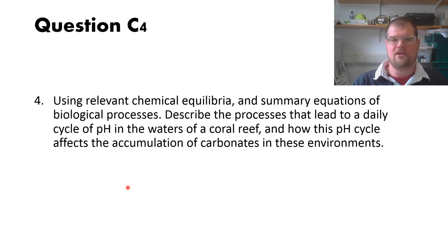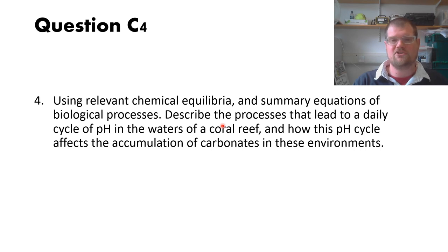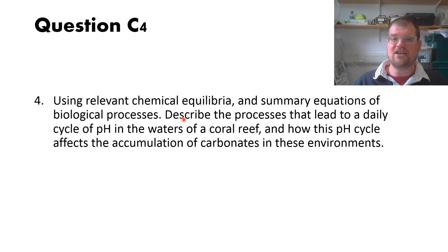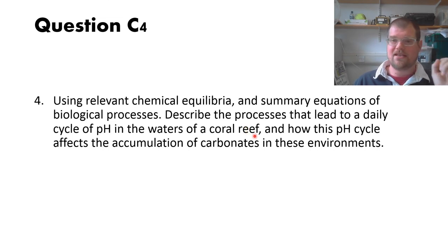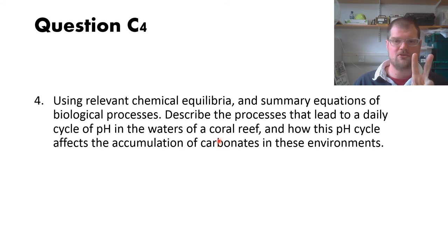The first part asks you to use relevant chemical equilibrium and summary equations — basically the equations for photosynthesis and related processes — as a clue to what you should include. The next sentence has two clauses: first, describe the processes that lead to a daily cycle of pH in the waters of a coral reef; and second, how this pH cycle affects the accumulation of carbonates. Quite a lot of people missed a whole bunch of marks for this question because they only answered the first part.